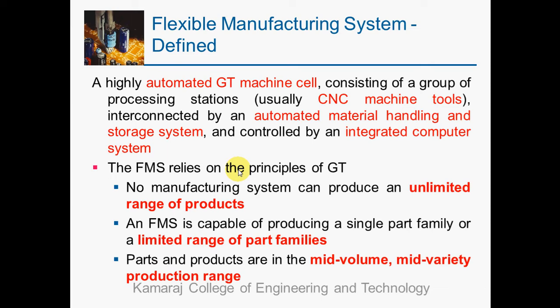No manufacturing system can produce an unlimited variety of products — any manufacturing system cannot produce an unlimited range of parts. Even an FMS is capable of producing only a limited range of part families. Hence, parts and products in the mid-variety and mid-volume production range can only be produced in a flexible manufacturing system.